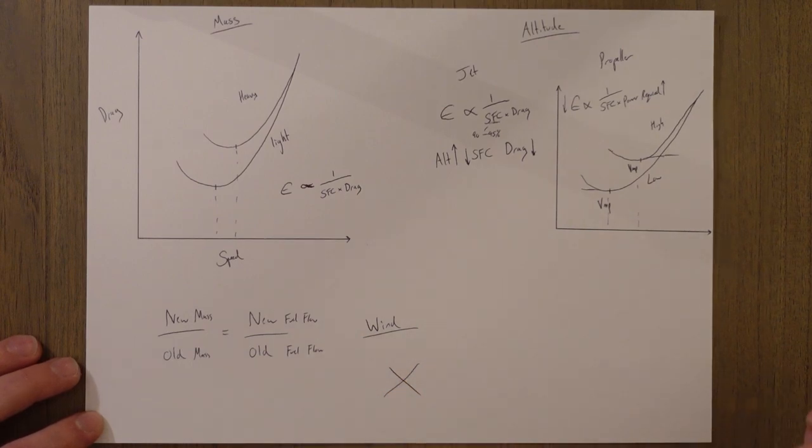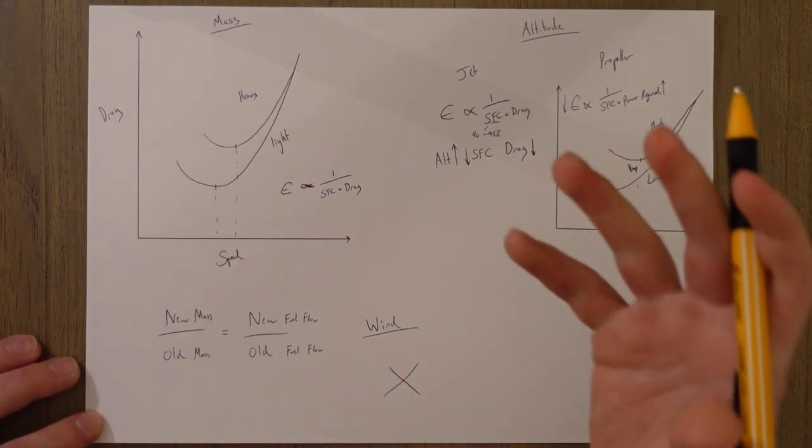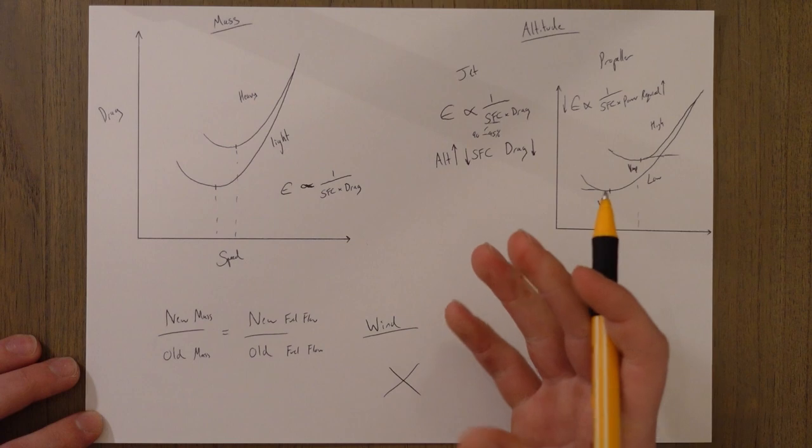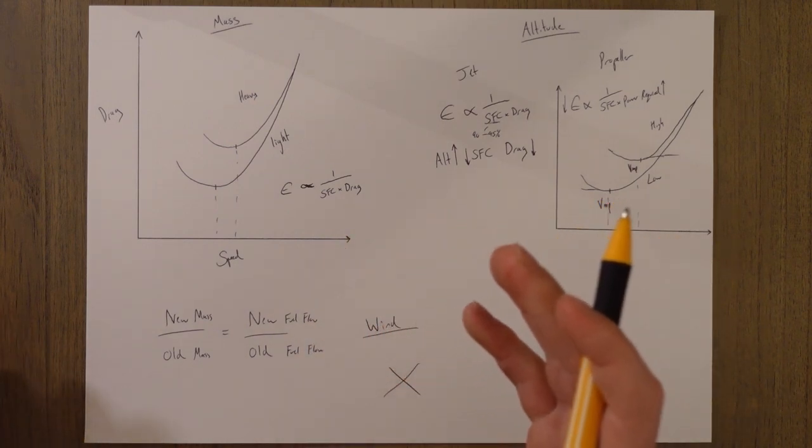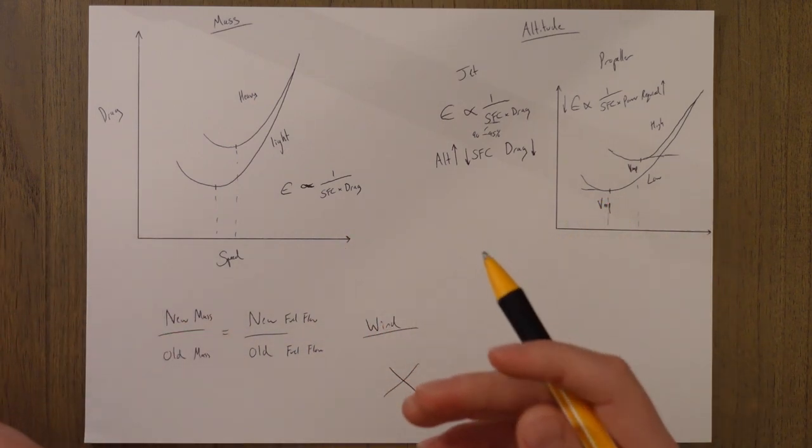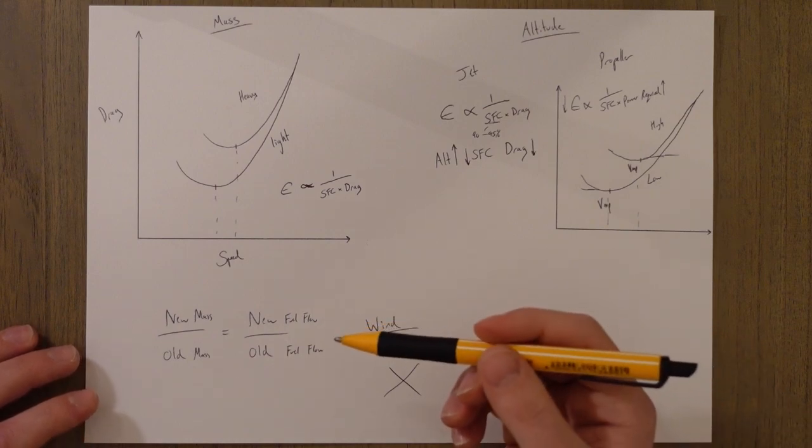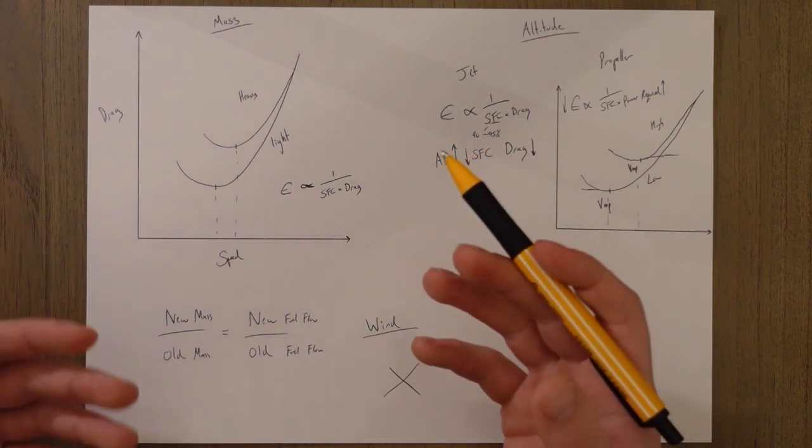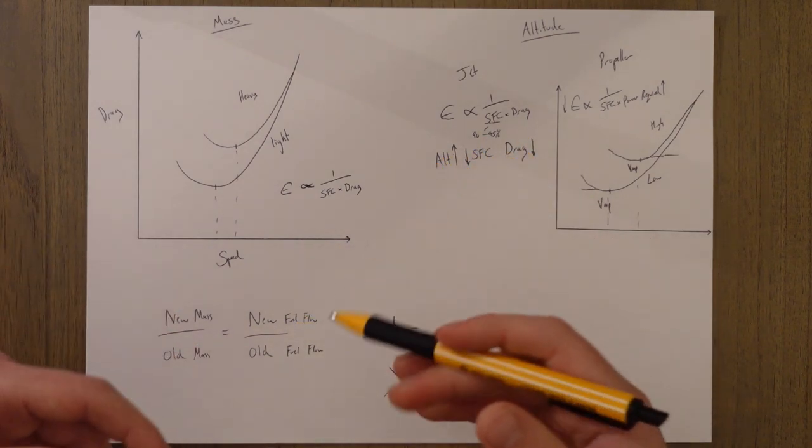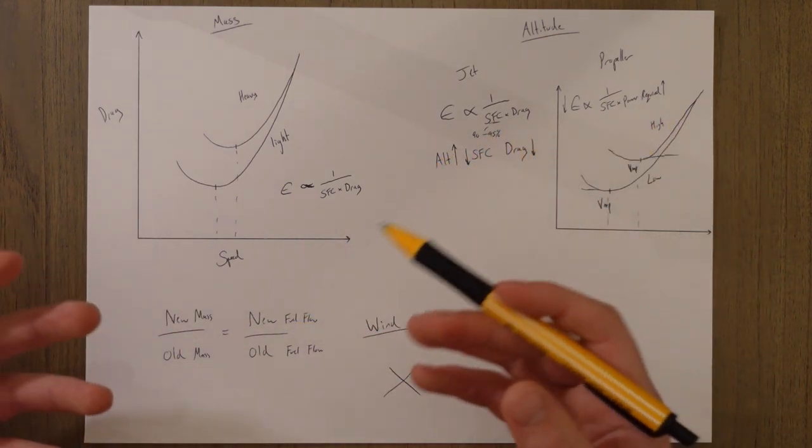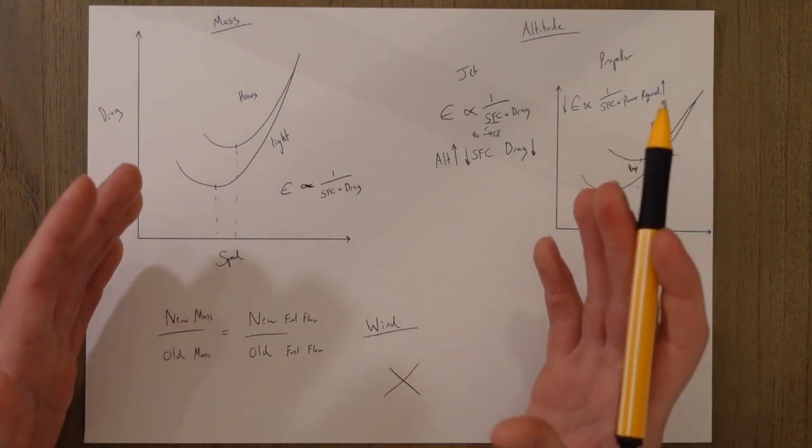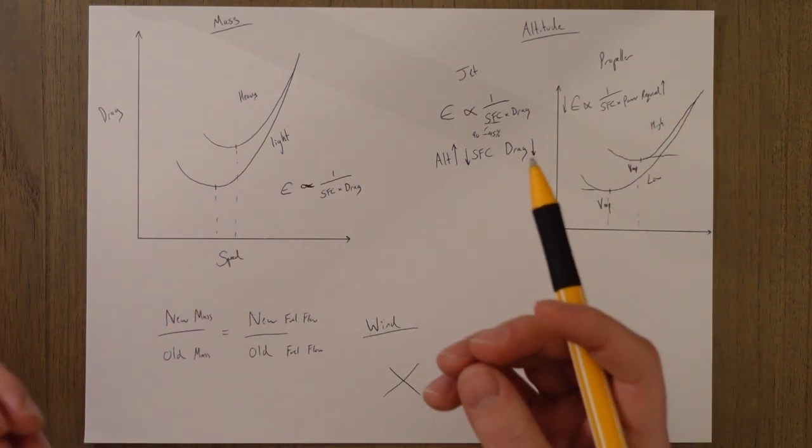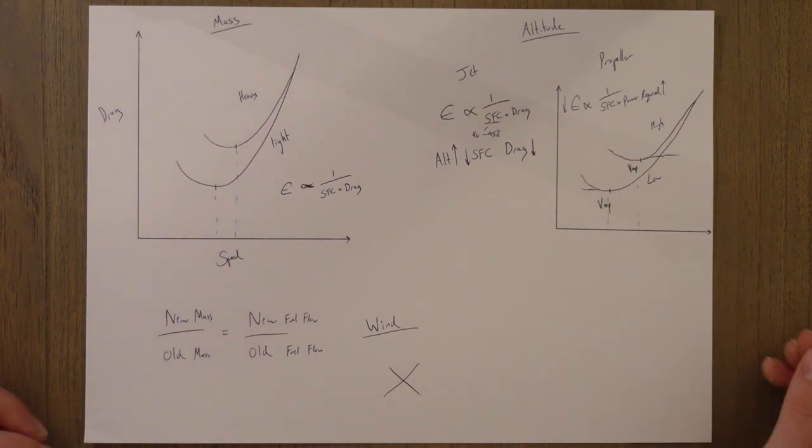So wind does not influence our endurance. This is because we aren't thinking about distances along the ground, just time in the air. A strong headwind might slow us down across the ground but that doesn't matter if we're in the hold near the airport. As long as we can stay up in the air for 20 or 30 minutes it doesn't really matter if we're covering x amount of distance on the ground, we're just interested in how long we're going to spend in the air.